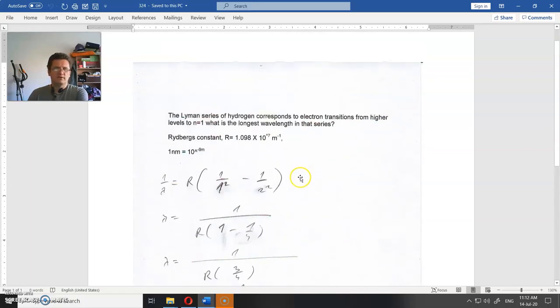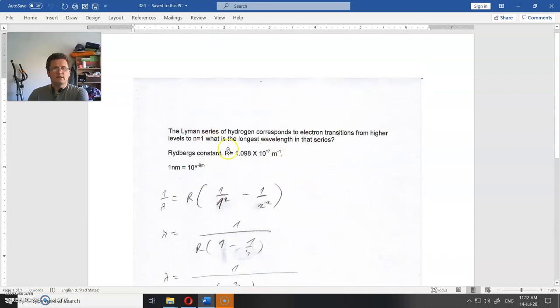First of all, to tell you there is nothing more in the PDF file except this. The Lyman series of hydrogen corresponds to electron transitions from a higher level to N=1. What is the longest wavelength in that series?